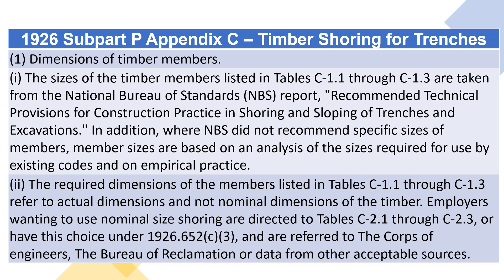D.1. Dimensions of Timber Members. (i) The sizes of the timber members listed in Tables C1.1 through C1.3 are taken from the National Bureau of Standards (NBS) report, Recommended Technical Provisions for Construction Practice in Shoring and Sloping of Trenches and Excavations. In addition, where NBS did not recommend specific sizes of members, member sizes are based on an analysis of the sizes required for use by existing codes and on empirical practice. 2. The required dimensions of the members listed in Tables C1.1 through C1.3 refer to actual dimensions and not nominal dimensions of the timber. Employers wanting to use nominal size shoring are directed to Tables C2.1 through C2.3 or have this choice under 1926.652(C)(3) and are referred to the Corps of Engineers, the Bureau of Reclamation, or data from other acceptable sources.